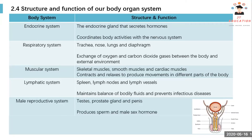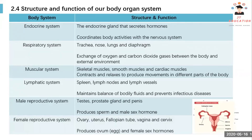The male reproductive system contains the testis, prostate gland, and penis — it functions to produce sperm cells and male sex hormones. The female reproductive system contains the ovary, uterus, fallopian tube, vagina, and cervix — it functions to produce ova and female sex hormones.